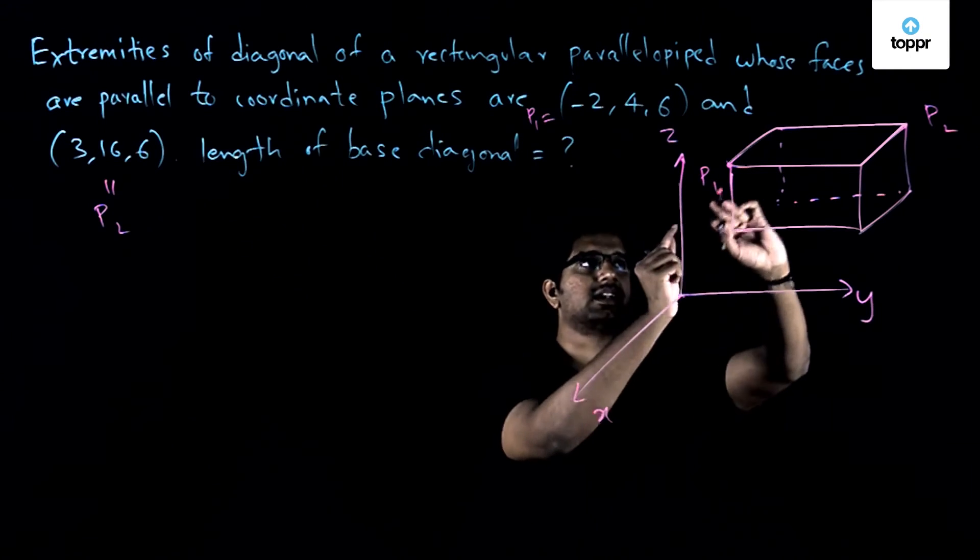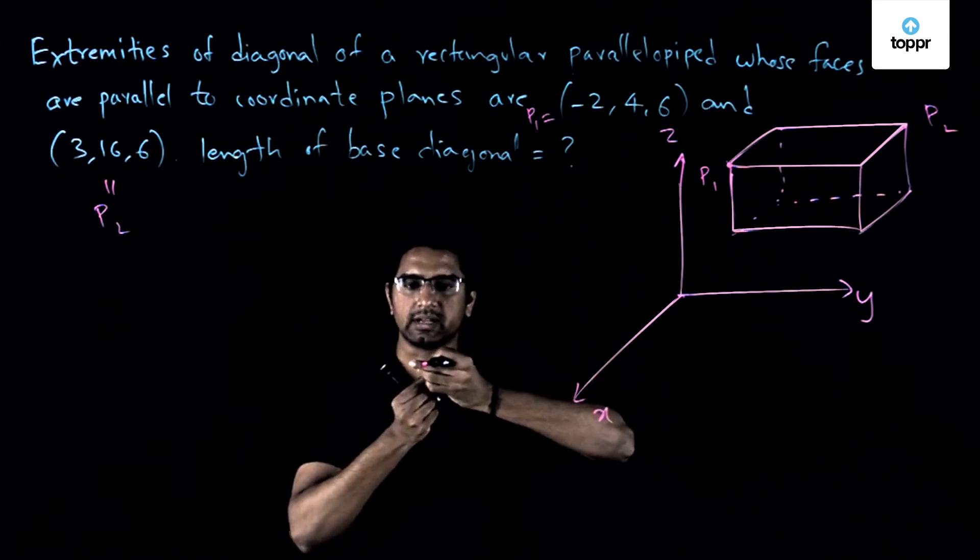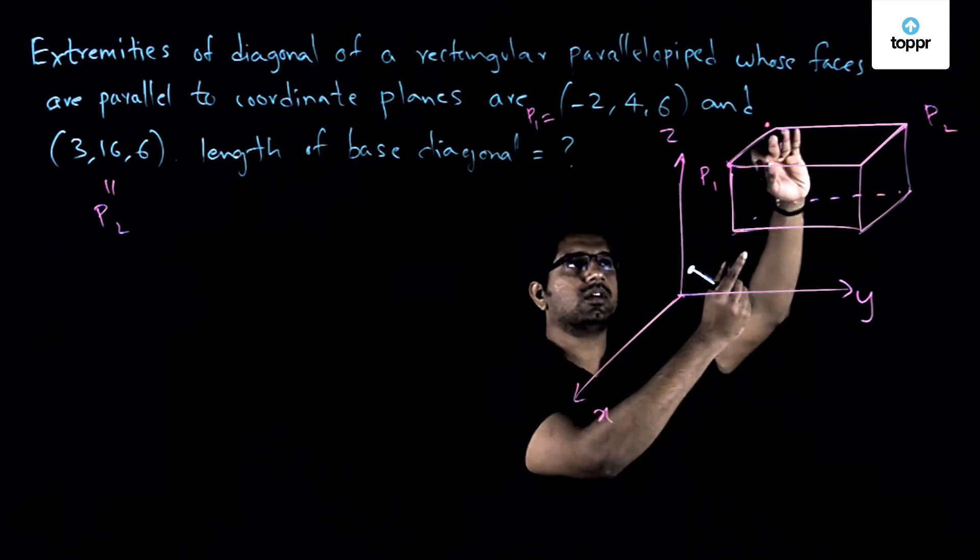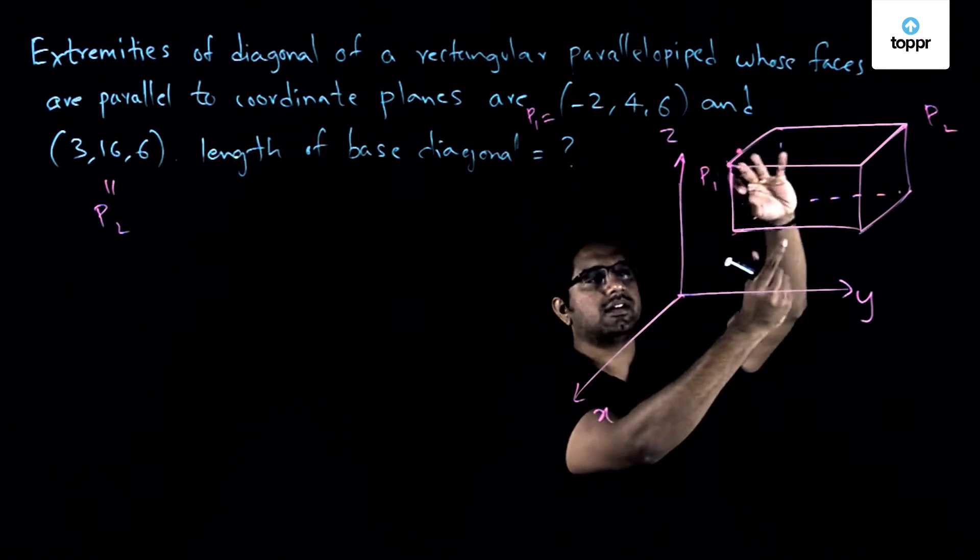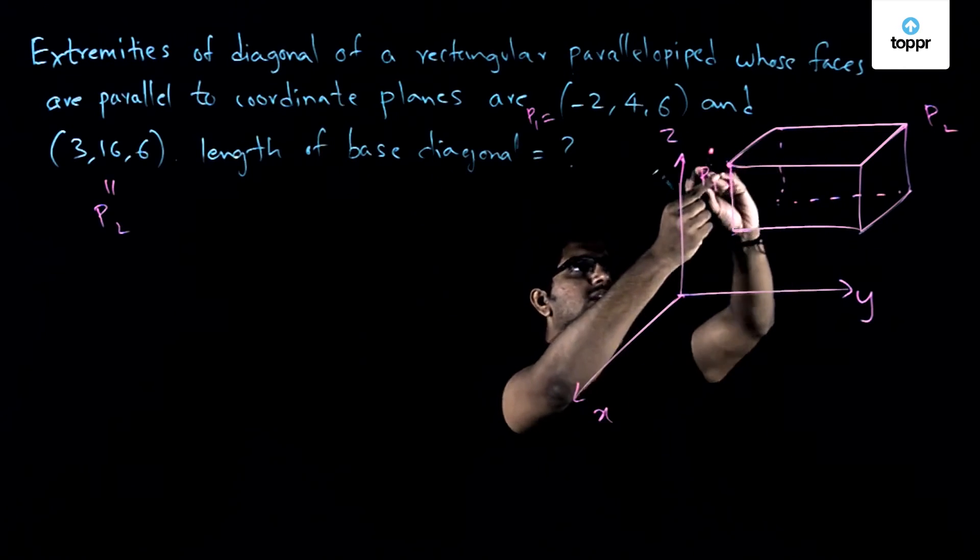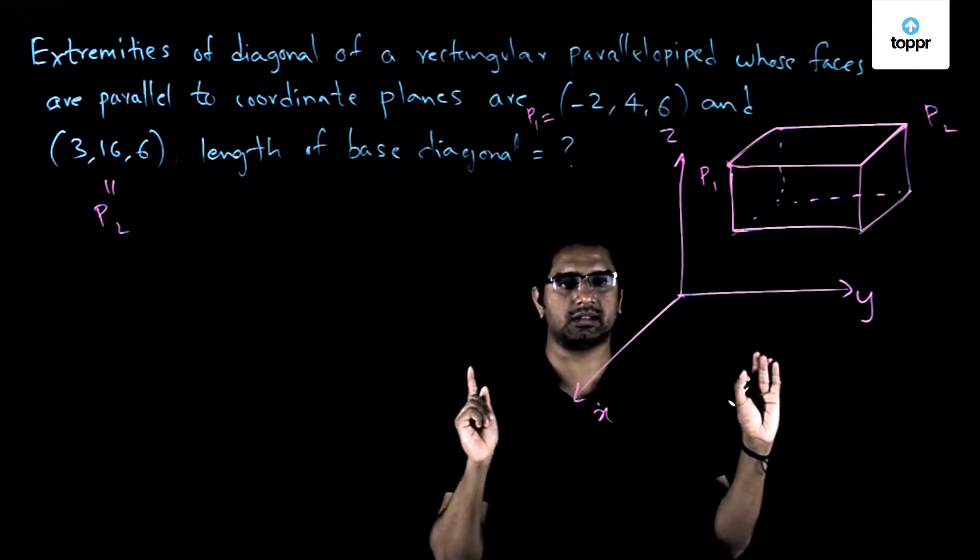Because the points which are given to us, their z coordinate is remaining the same but their x and the y coordinates are changing. So that is why we are immediately able to deduce that the points are actually corresponding to the diagonal. And we have also found out that this is what the base, so this is not the base but rather the top of the parallelepiped, but if you take the length of the diagonal of this, this will be equal to the length of the diagonal of the base.